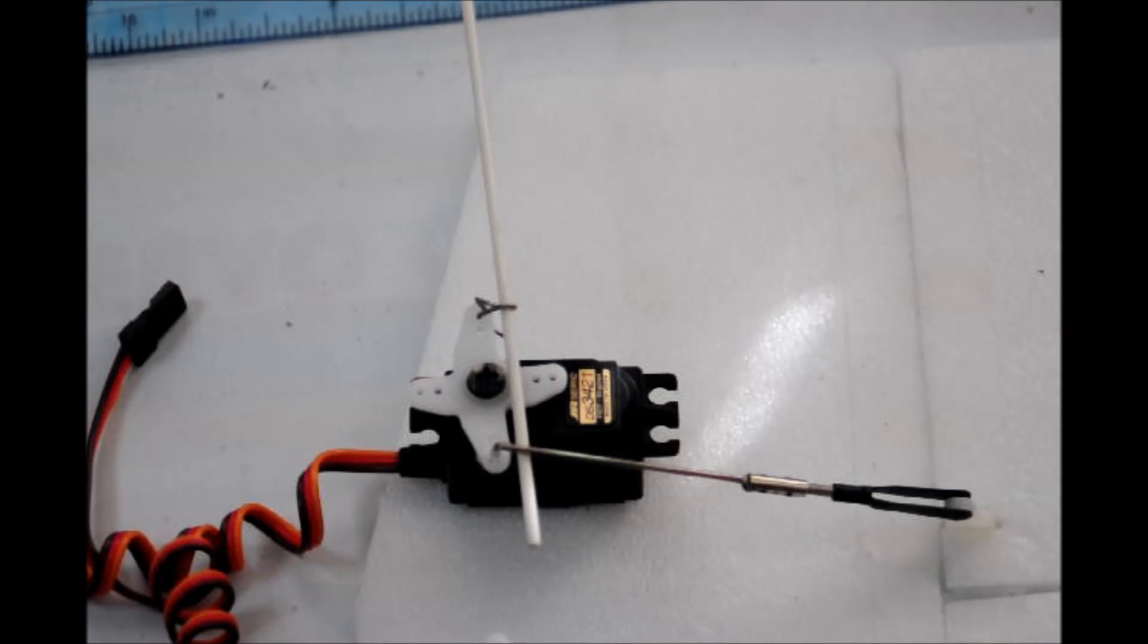Now plug the servo into a receiver that's bound to your radio and make sure it's working. Begin adjusting the trim one click at a time to see if the servo responds to each click. We're going to show you that right now.